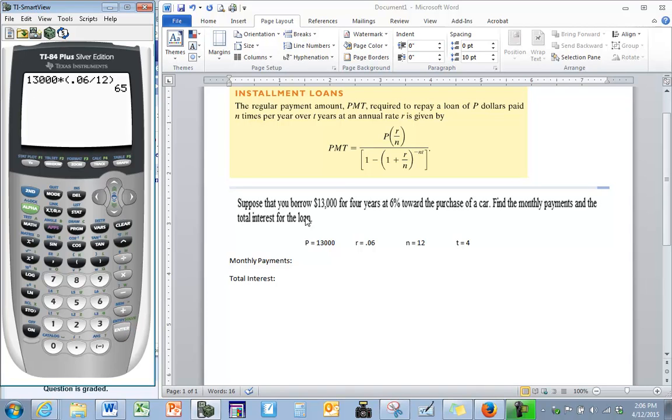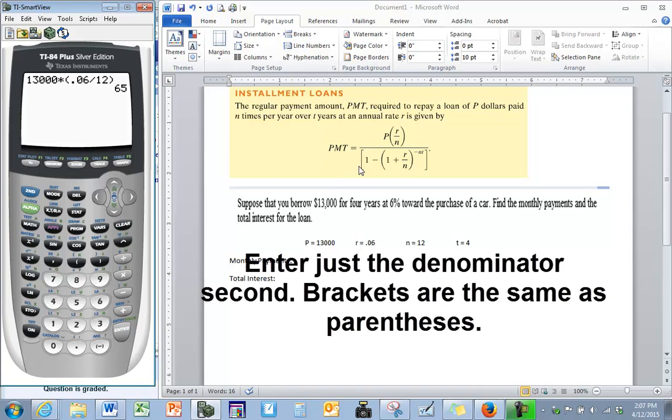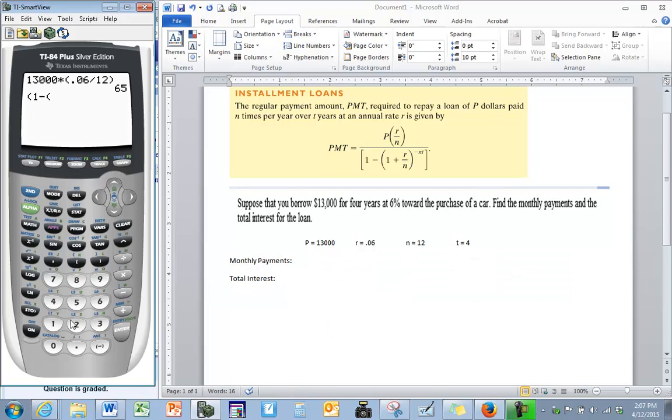Now we have the answer for just the numerator. And now we're going to enter in the denominator second. A bracket is the same exact thing as parentheses. So we're going to enter the formula and substitute in our variables. R, .06, N, 12.